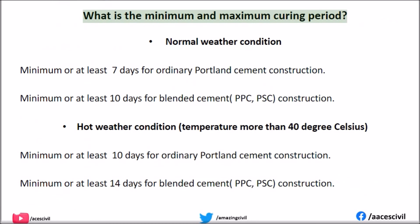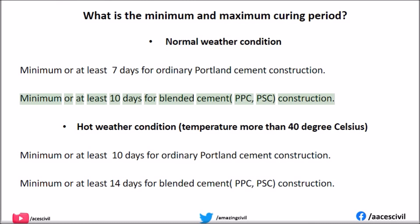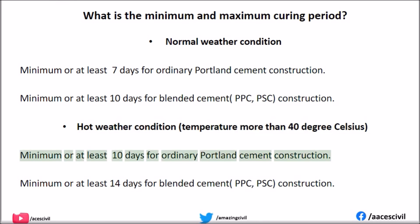What is the minimum and maximum curing period? Under normal weather conditions, a minimum of at least 7 days is required for ordinary cement construction. A minimum of at least 10 days is required for blended cement construction. A minimum of at least 14 days is required for blended cement construction using PPC or PSC.